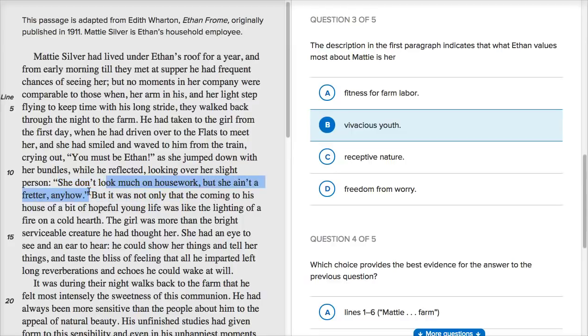But she don't look much on housework, but she ain't a fredder anyhow. But then they say, but it was not only that the coming to his house of a bit of hopeful young life was like the lighting of a fire on a cold breath. So he's saying, it wasn't only essentially her vivacious youth. The girl was more than the bright, serviceable creature he had thought her. She had an eye to see and an ear to hear. He could show her things and tell her things and taste the bliss of feeling that all he imparted left long reverberations and echoes he could wake at will. So this is, it starts off saying, look, it didn't look like she was necessarily the most impressive person to look at from a labor point of view. And sure, she had vivacious youth, but that wasn't it. The really powerful thing about her is she had an eye to see and an ear to hear. He could show her things and tell her things and taste the bliss of feeling that all he imparted left long reverberations and echoes he could wake at will. So it really is about the receptive nature. She was open to these things that he wanted to teach her and she was, at least he thought, excited about these things.